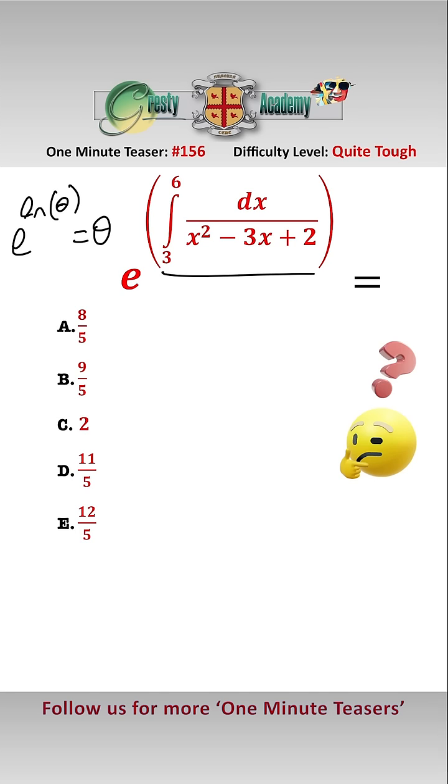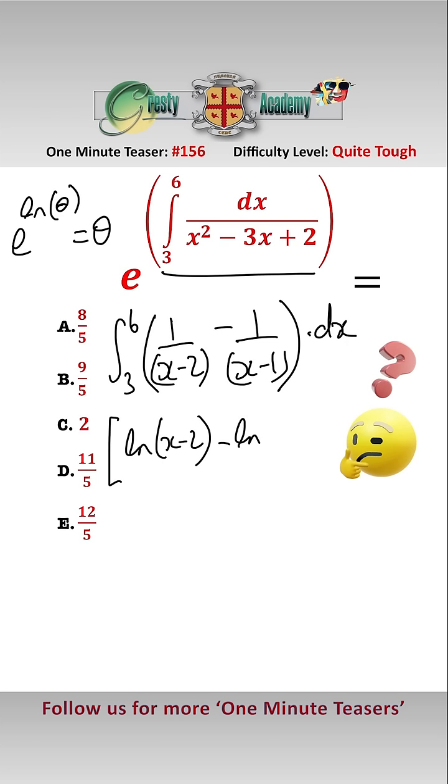So let's have a look. Looking at the integral and doing partial fractions, that gives us the integral between 3 and 6 of 1 over x minus 2 minus 1 over x minus 1 dx. And integrating that gives us log of x minus 2 minus log of x minus 1 between 3 and 6.